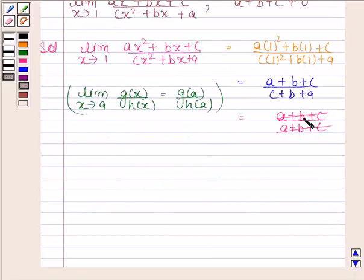On cancelling a plus b plus c from both numerator and denominator, we are left with 1. Hence, our required limit is 1.